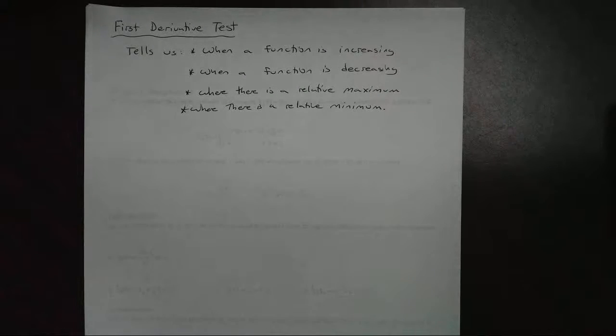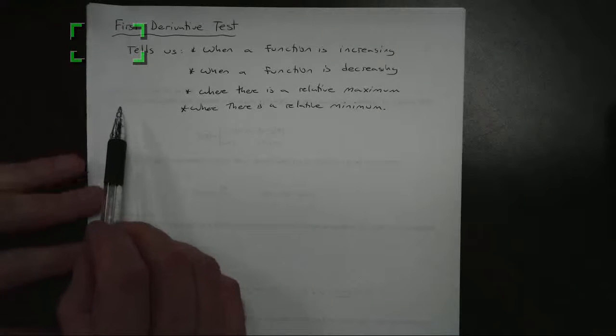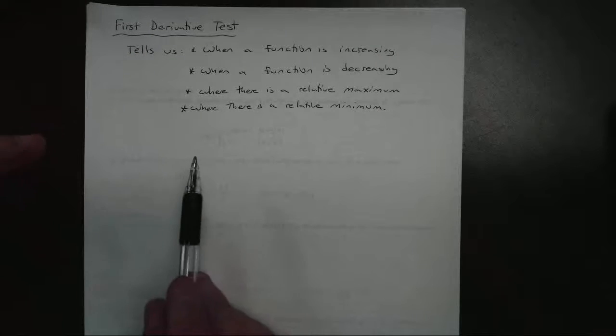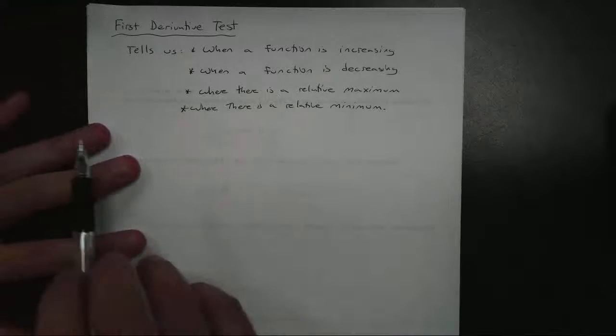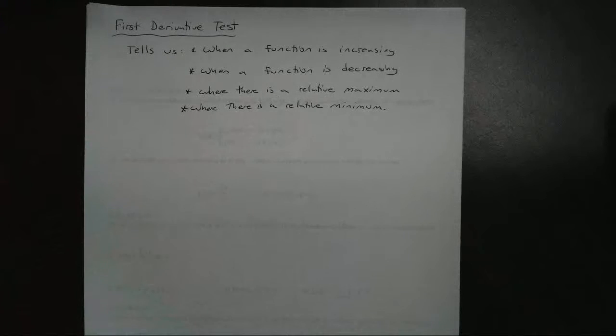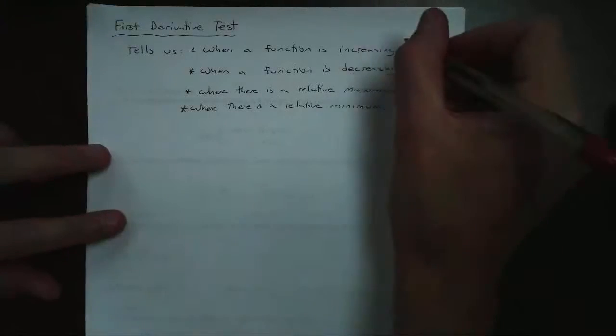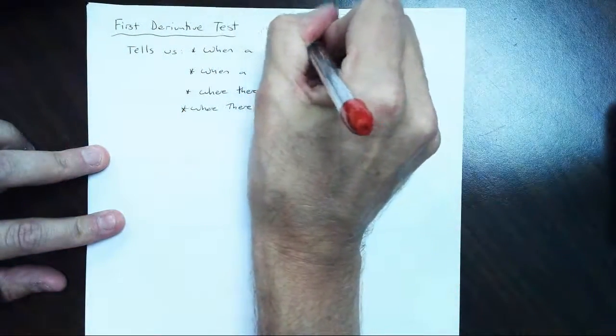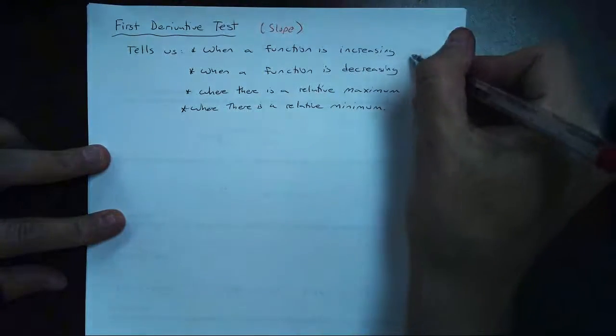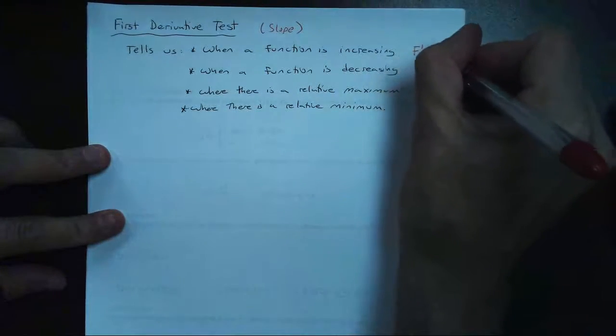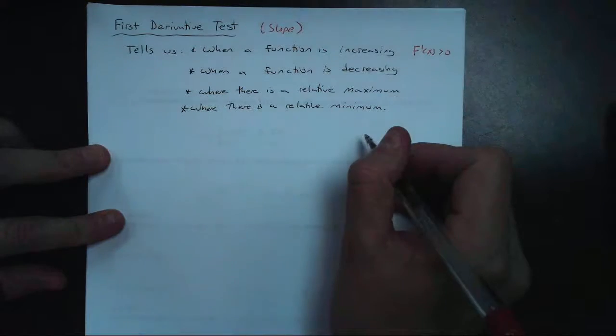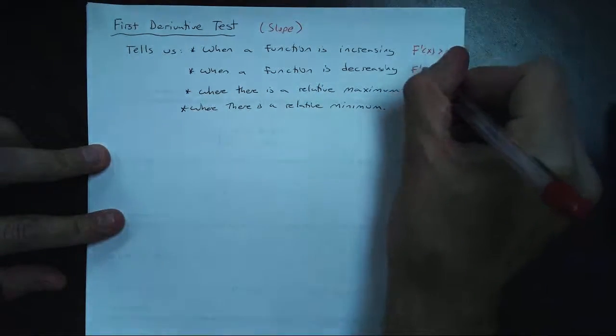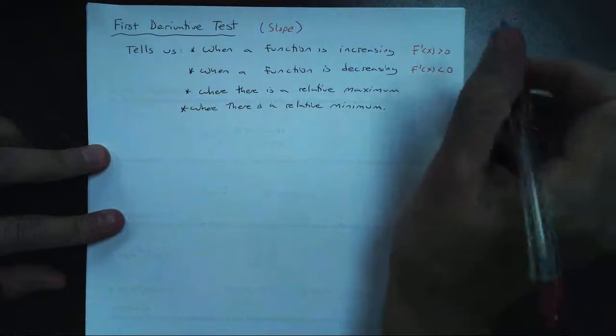Hi, welcome to our tutorial on the first derivative test. Now the first derivative test tells us four things. One, it's going to tell us when a function is increasing, and it's going to tell us when a function is decreasing. We know it's going to be increasing if the derivative of a function is positive or greater than zero. We know a function is going to be decreasing when the derivative is negative or less than zero.